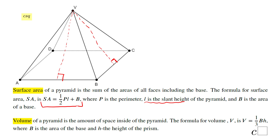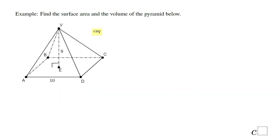The volume of a pyramid is very similar to that of a prism — just divide by 3 or multiply by one-third. Let's see this example. I'm going to add the area of the base and the lateral faces for the surface area, so: surface area equals area of the base plus the lateral area.